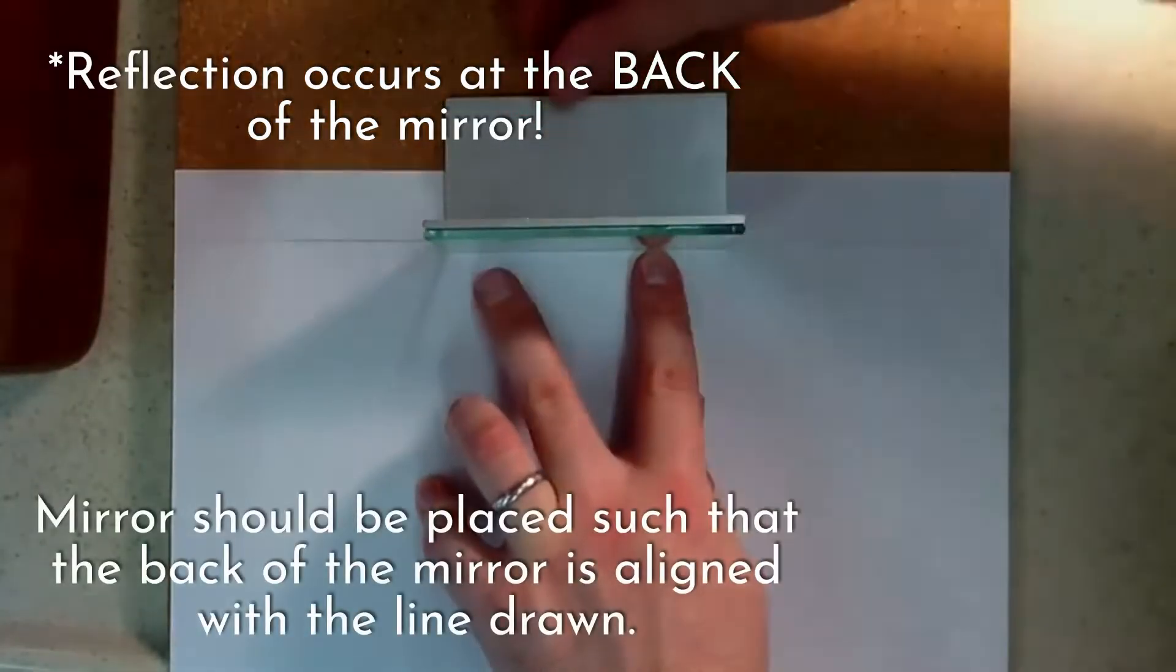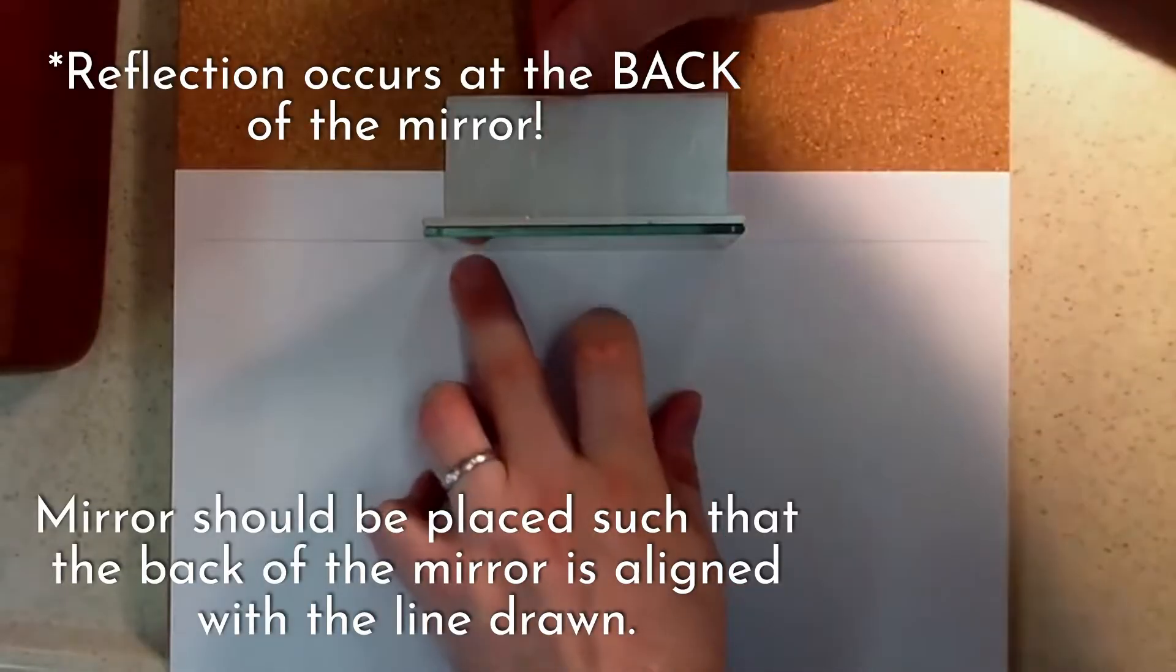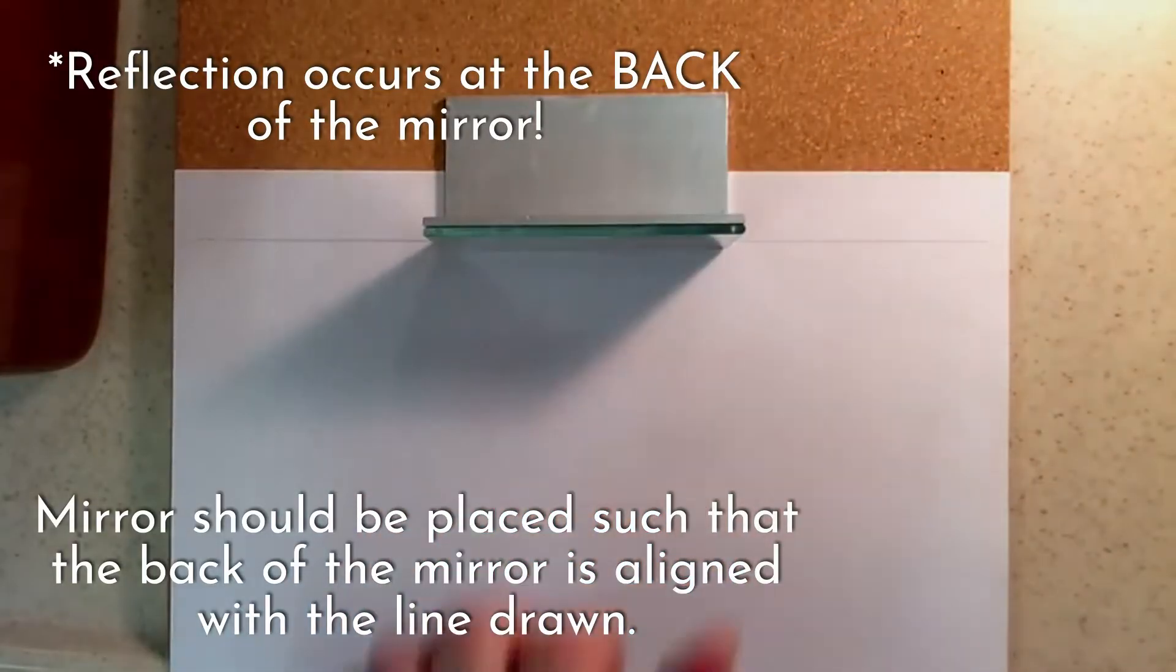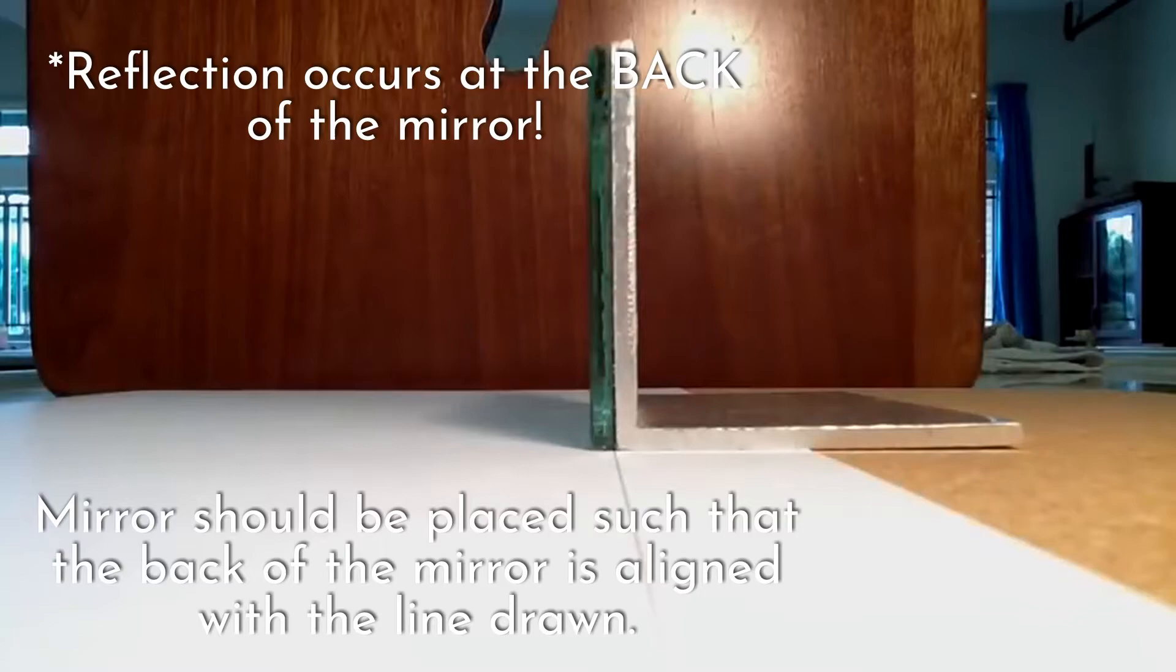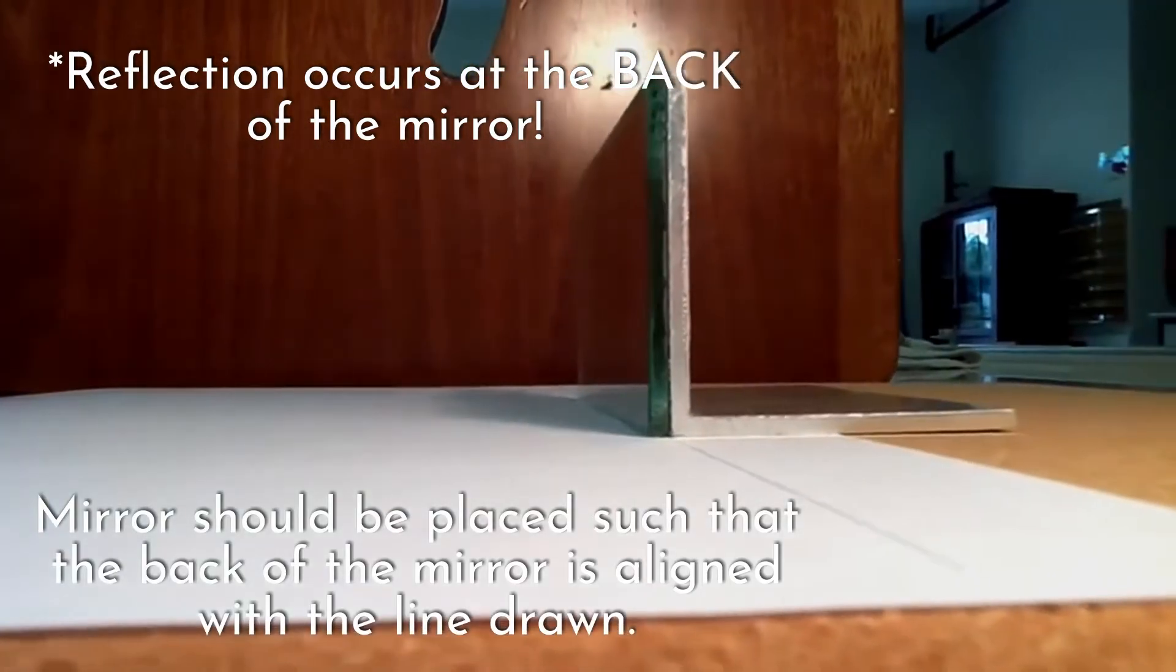The mirror will be placed along the line, but remember reflection occurs at the back of the glass of the mirror, therefore we place the back of the mirror on the line.